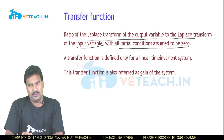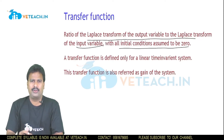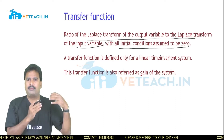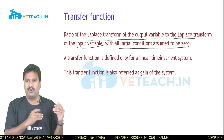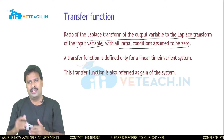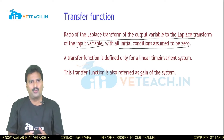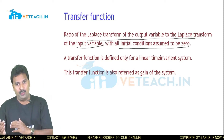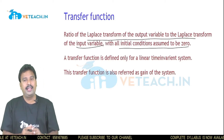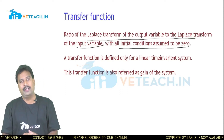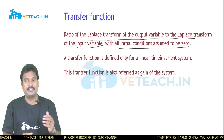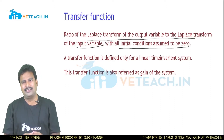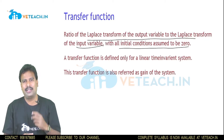Any control system will have certain parameters as input variables and certain parameters as output variables. How these output parameters are mapped with the input parameters is given by the transfer function. In general, this transfer function is a mathematical equation.